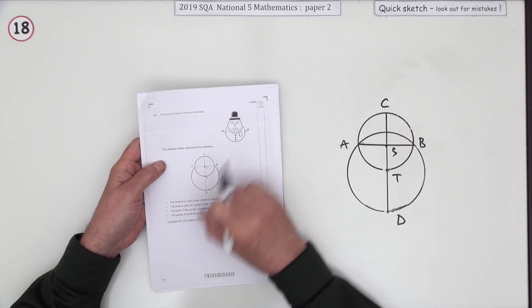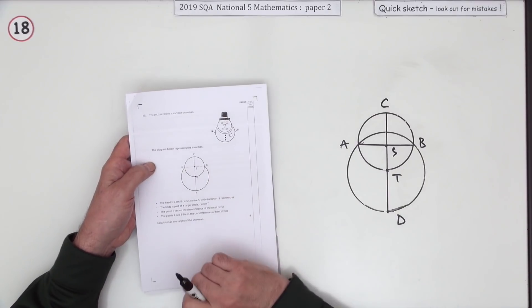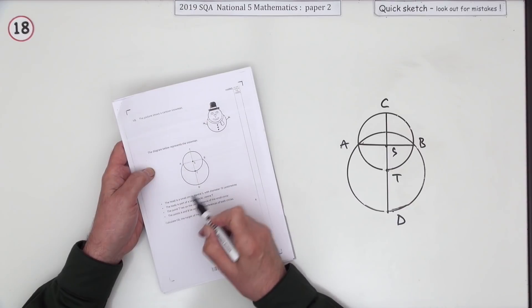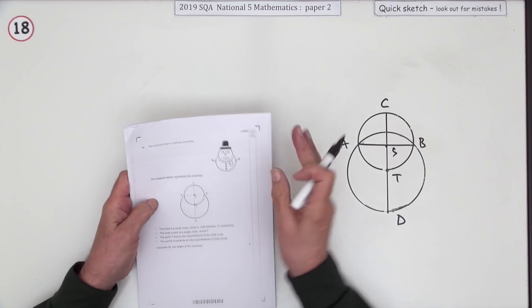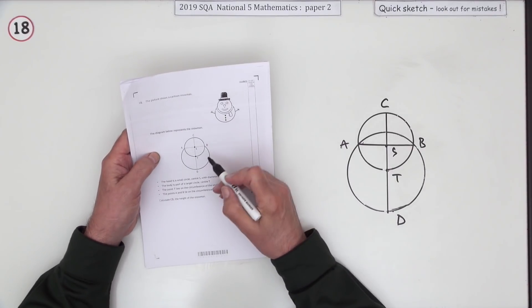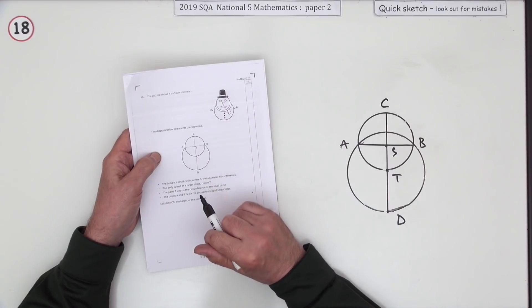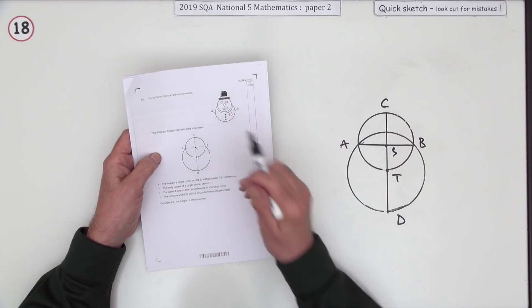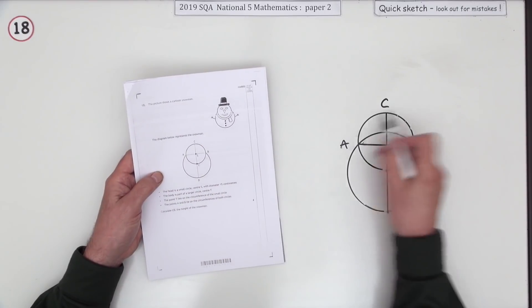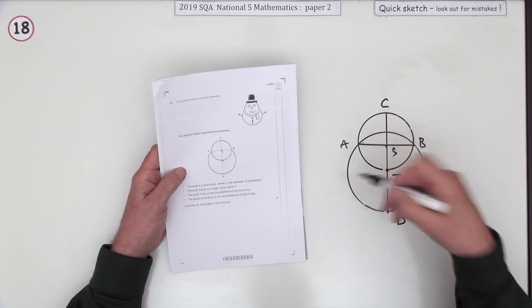Number 18 from paper 2 of the 2019 National 5 — looks like a circles question, there are four marks. There's a chord in a circle question. It says this picture represents a cartoon snowman, and this diagram represents the intersection of two circles.